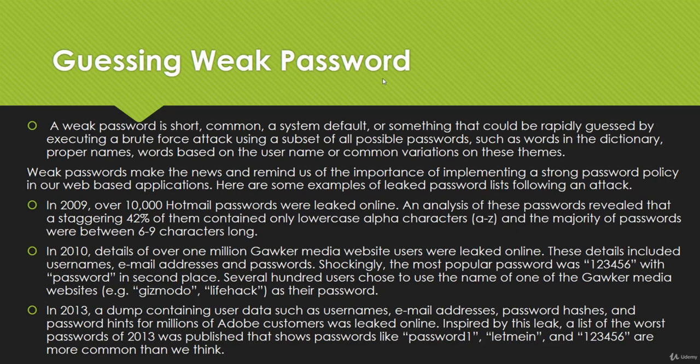In 2010, details of over 1 million Gawker Media website users were leaked online. These details included usernames, email addresses, and passwords. It was shocking to know that the most popular password among them was '123456', with 'password' in second place. In 2013, several hundred users chose to use the name of one of the Gawker Media websites like Gizmodo or Lifehacker as their password, which is very easy to guess.